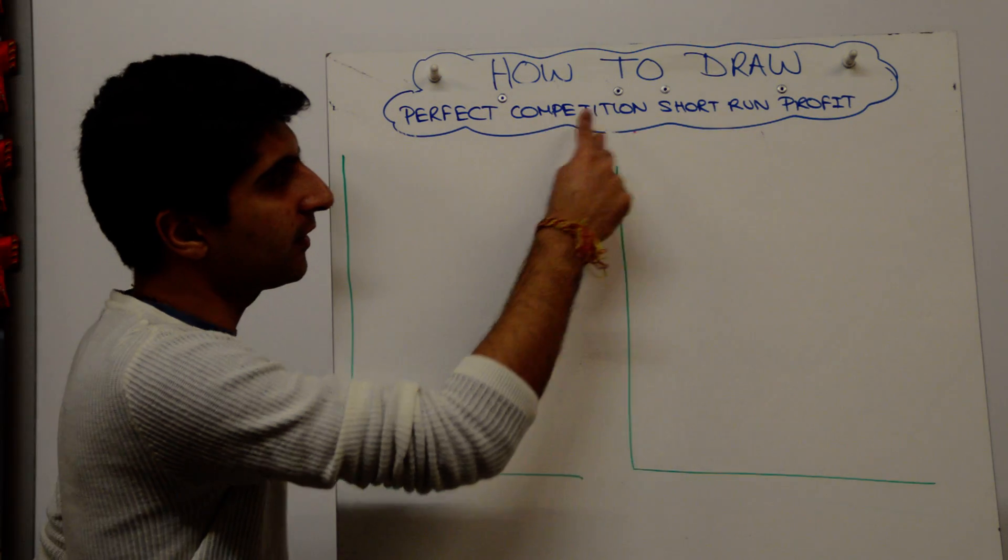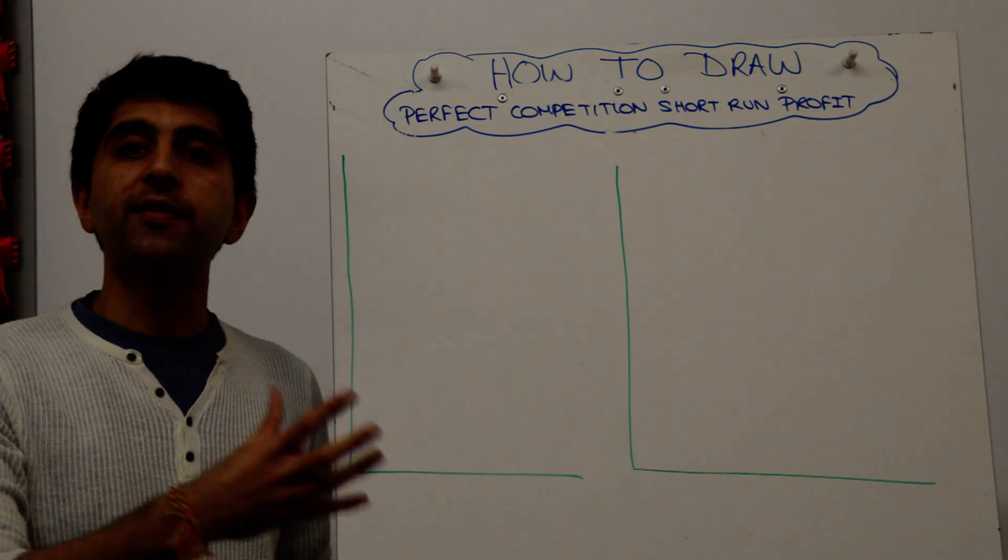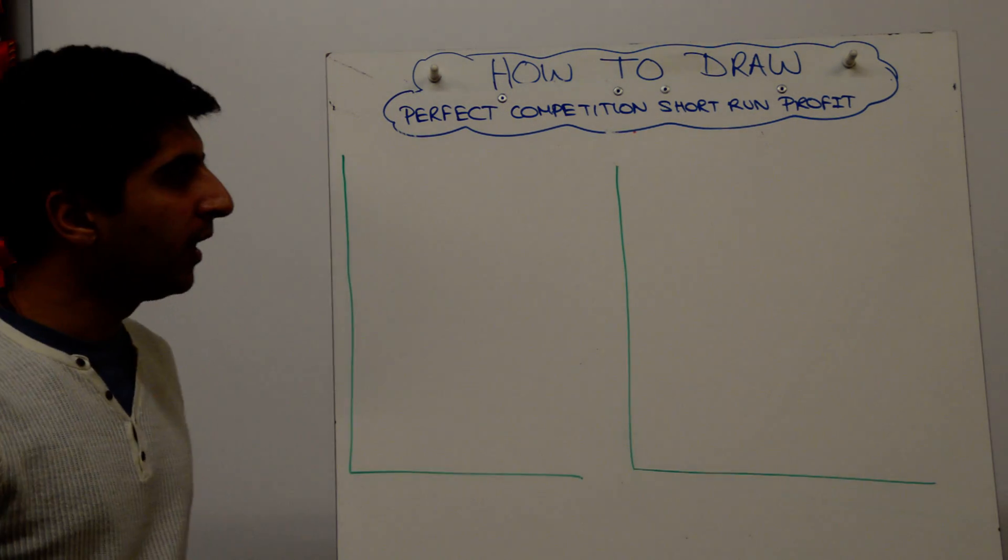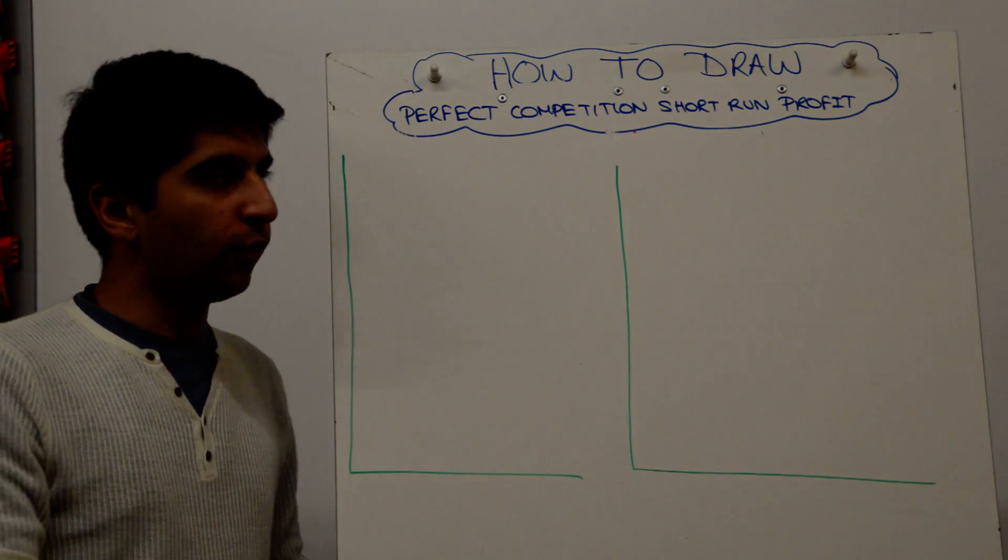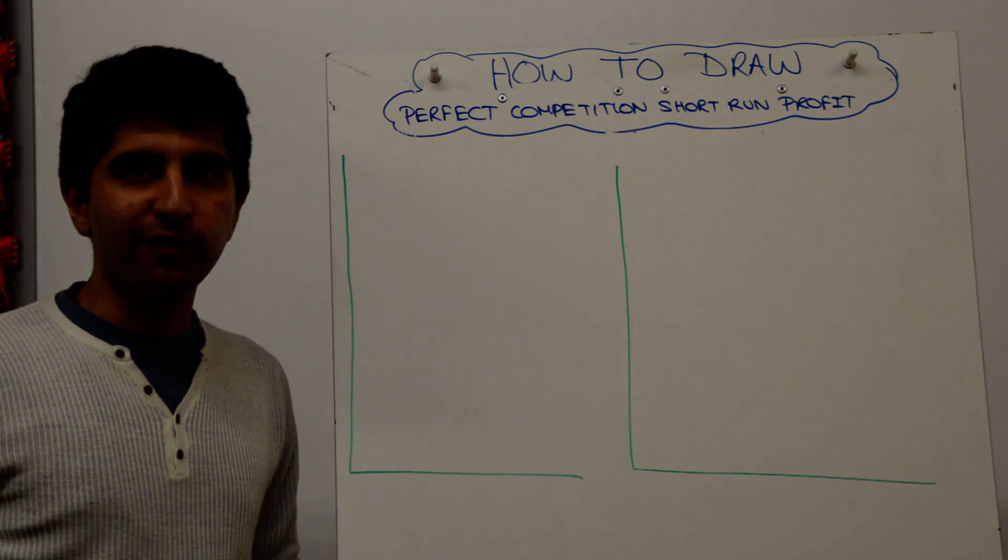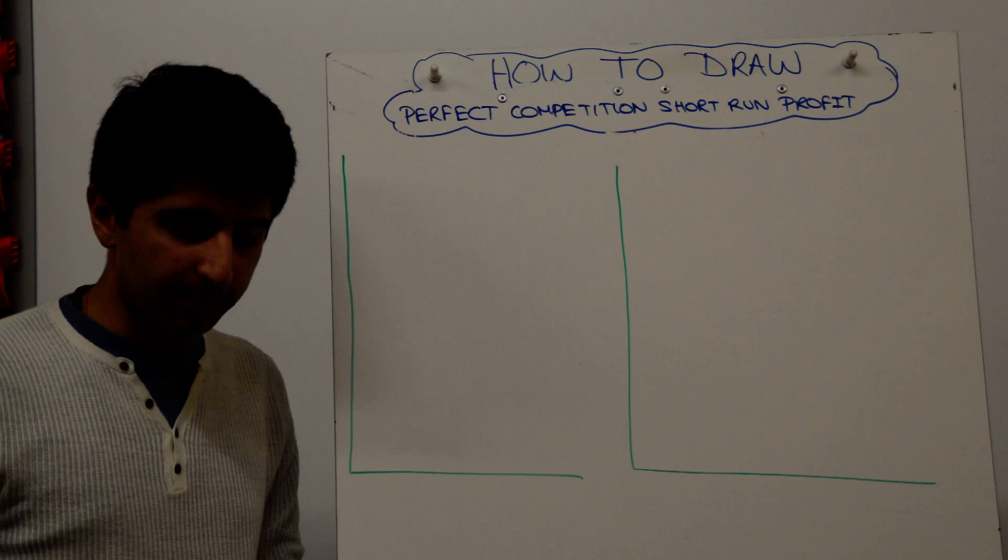Hi everybody, a theory that's not hard to understand but very difficult to draw the diagram right. Let's get started on how to draw short-run supernormal profit in perfect competition with the adjustment as well.